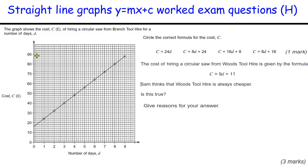General question here: we've got a connection between hiring tools, the number of days, and how much it costs. We've got to find the correct form of c that represents this line. Checking the scale, it's going up by 2, 4, 6, 8, 10, 12, 14, 16. So we know it goes through 16. Looking at these equations, there are 2 with 16 in. There's only one where it's plus 16. We check the gradient: as we go across 1, we're going up 2, 4, 6, 8. So 8d plus 16 would be the correct answer.